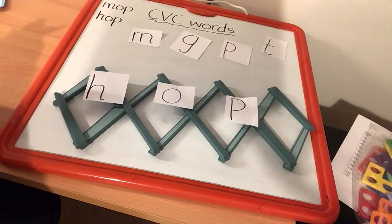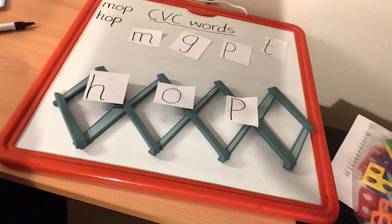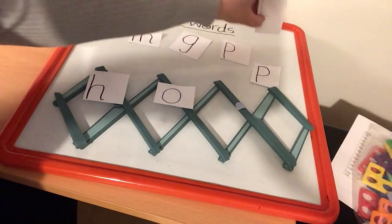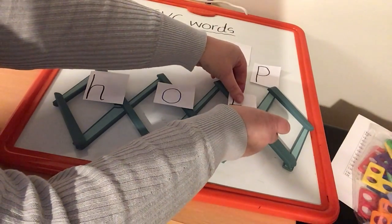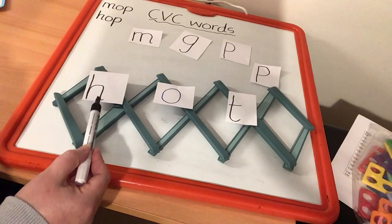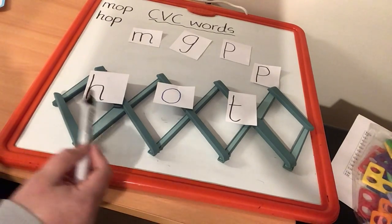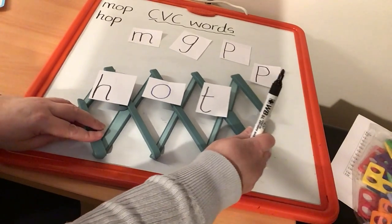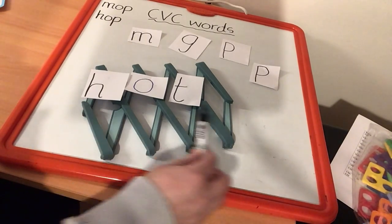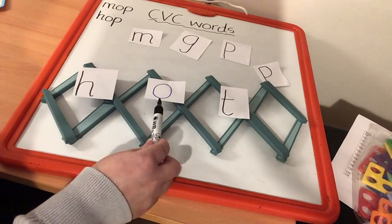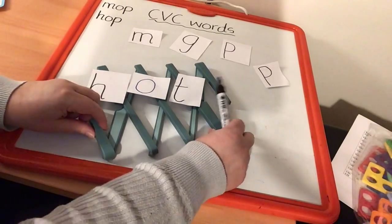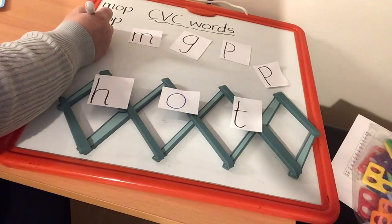Now I am going to change the last consonant. Take away my P, and I'm going to put in T. Let's sound across our word: H-O-T. And blend — HOT. Let's sound it out: H-O-T. And blend it — HOT. Well done, fantastic. There's another one to add to our list.